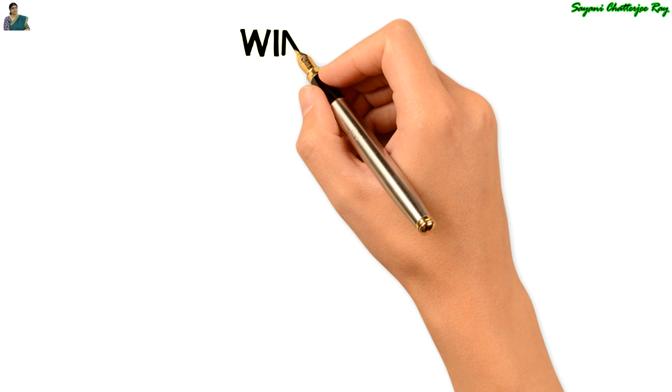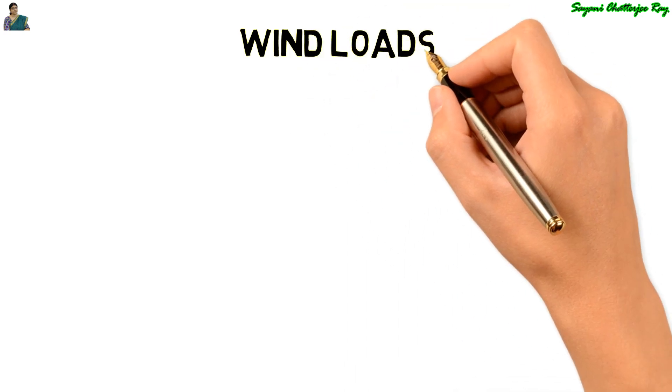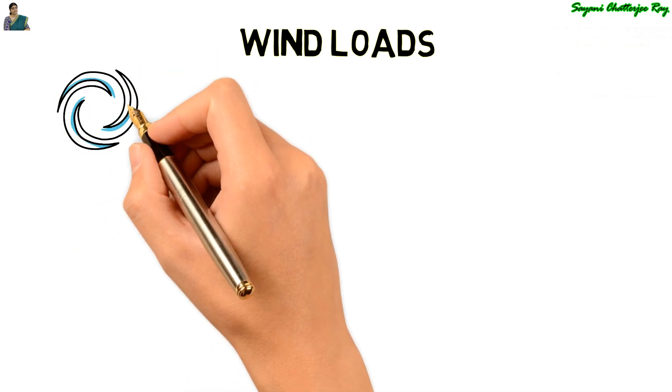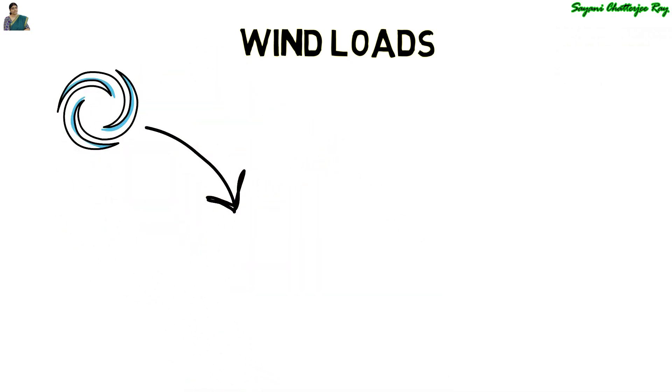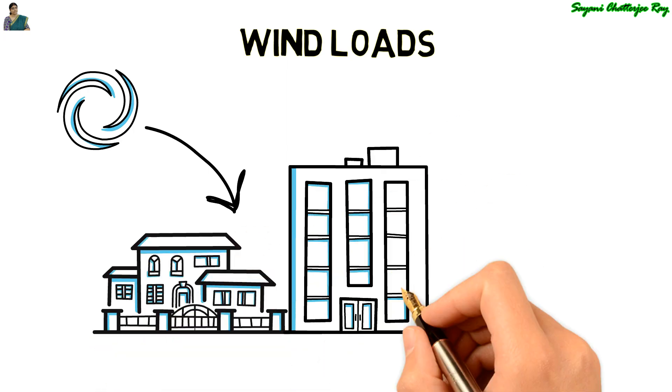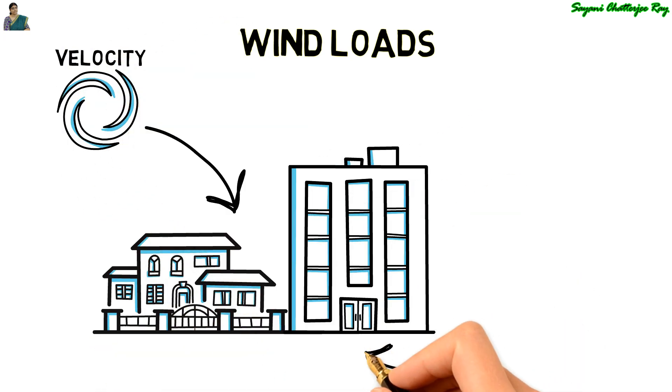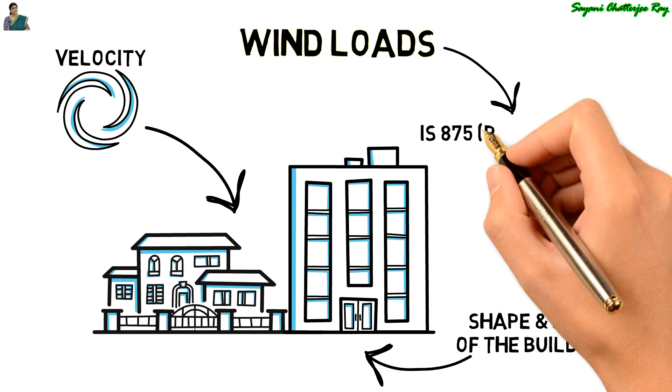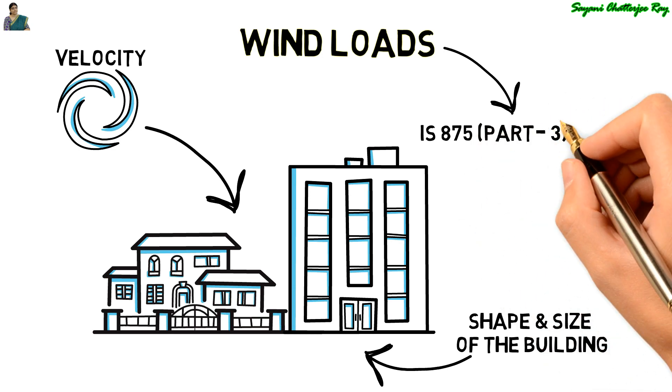Wind load is a very important load which has to be considered while designing any building. The force which is exerted by the horizontal component of wind is to be considered while designing any building. It depends upon the velocity of wind and shape and size of the building. The method of calculating the wind load on any structure is given in IS 875 part 3 1987.